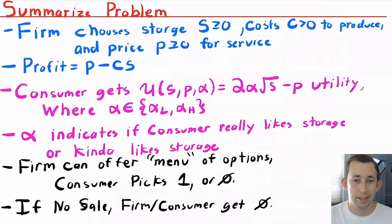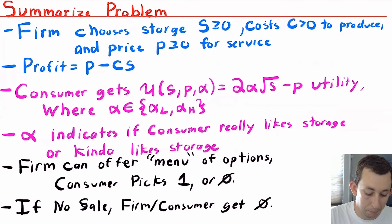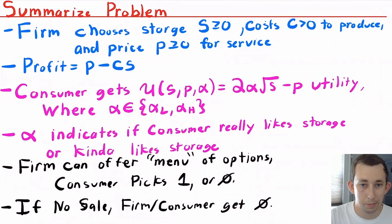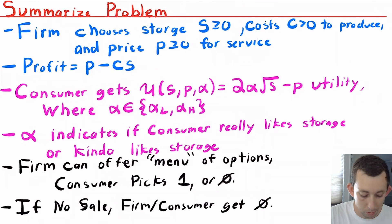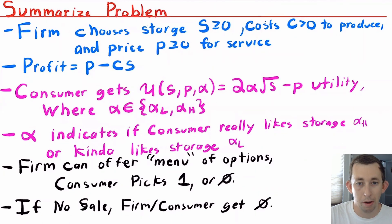Here is the cheat sheet based on the wording in the problem. The firm chooses storage S with marginal cost c > 0, so total cost is Sc. They choose a price P ≥ 0, and profit is P − cS. The consumer's utility is 2α√S − P, where α is either α_H (really likes storage) or α_L (kind of likes storage). The firm can offer a menu of options; the consumer can pick one package or zero packages, and if there's no sale, both get zero.